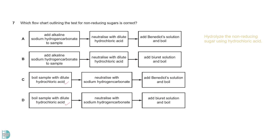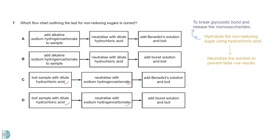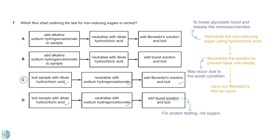The first step is to hydrolyze the non-reducing sugar using hydrochloric acid. This process involves breaking the glycosidic bond and releasing the monosaccharides. Then we must neutralize the solution to prevent false positive results due to the acidic condition. After that, we can carry out Benedict's test as usual. Biuret's reagent is used for protein testing, not sugars.